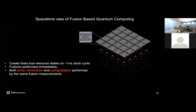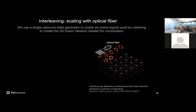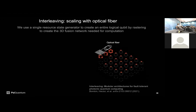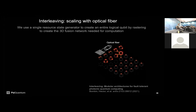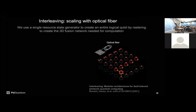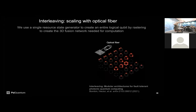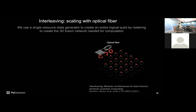Interleaving is one of the most powerful things about photonics. Instead of using hundreds of different resource state generators, we can take one resource state generator and connect it to itself using optical fiber in a way that produces the same volume of classically correlated bits at the end of the day — and that's all we need for fault tolerance to work.